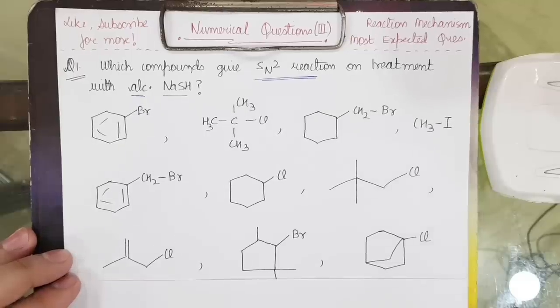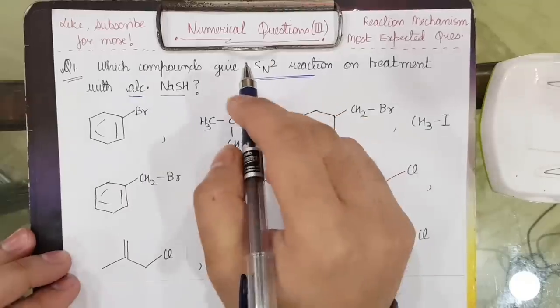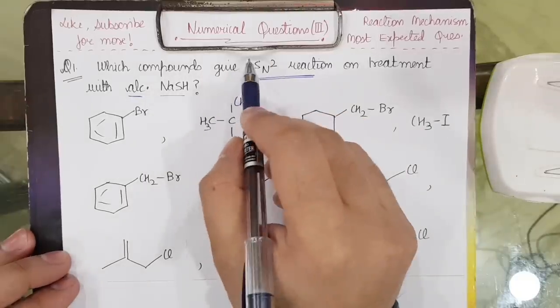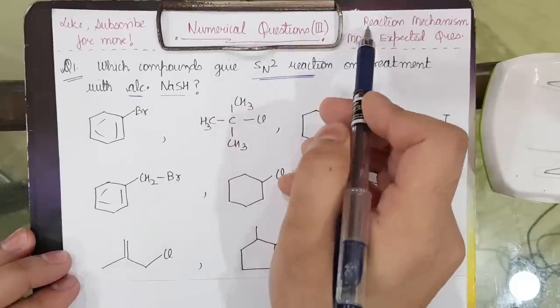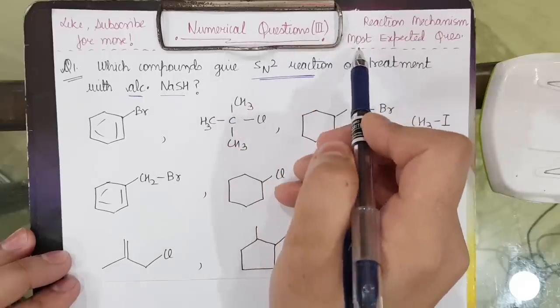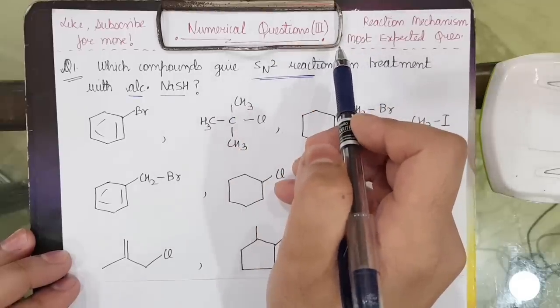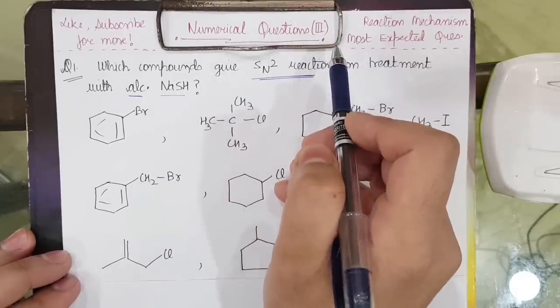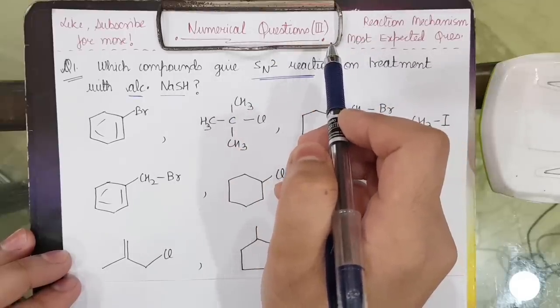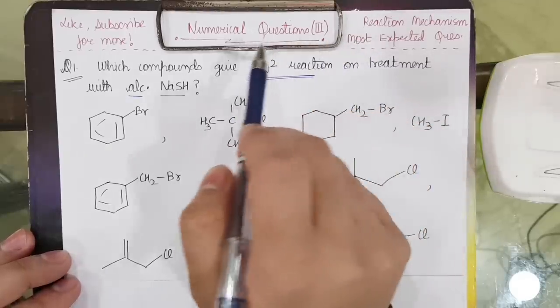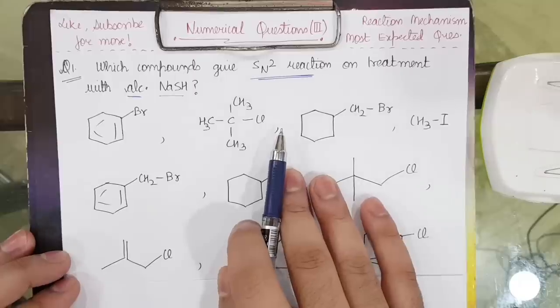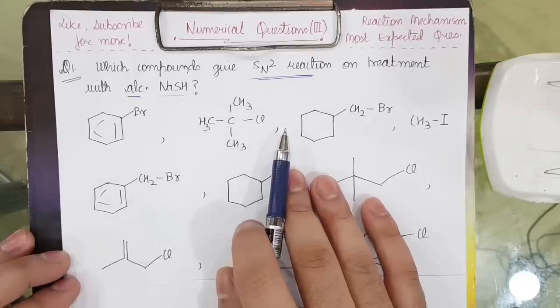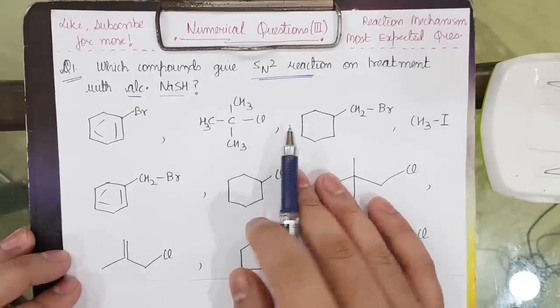Hello everyone, welcome to my new video. This is the Numerical Questions Part 3, in which I will discuss the most expected questions of reaction mechanism for JEE Mains 2020. The answer was equal to 4.